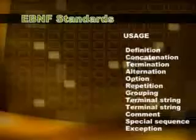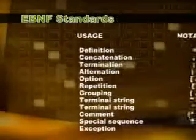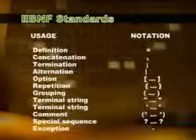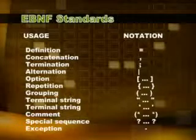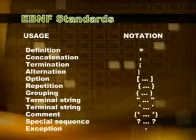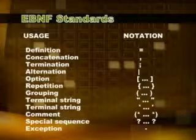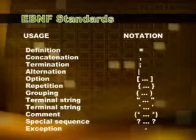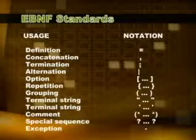EBNF is a code that expresses the grammar of a computer language. An EBNF consists of several syntactic elements, shown here with their usage and notation. These include: definition, concatenation, termination, alternation, option, repetition, grouping, terminal string, comment, special sequence, and exception.